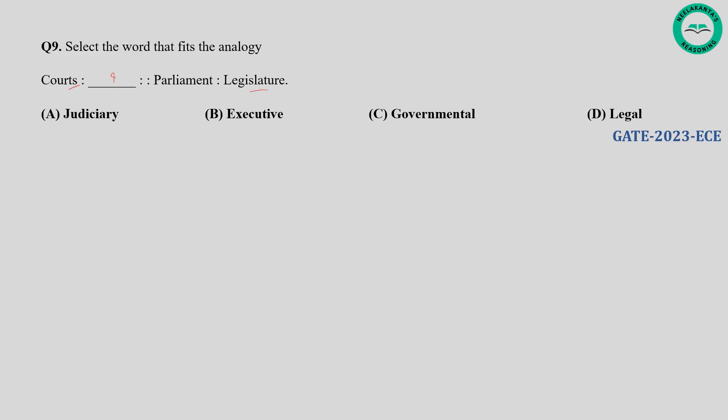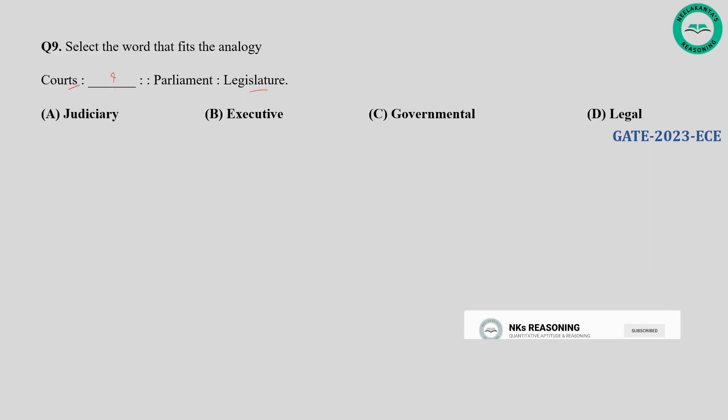Question number eight: Which word will be suitable among the given options? In this analogy, parliament is a part of the legislature. Courts are part of the judiciary. So the word that fits in the blank should be related to the judiciary branch. So courts are for judiciary.